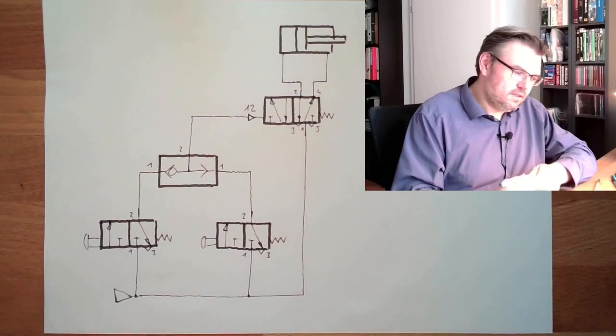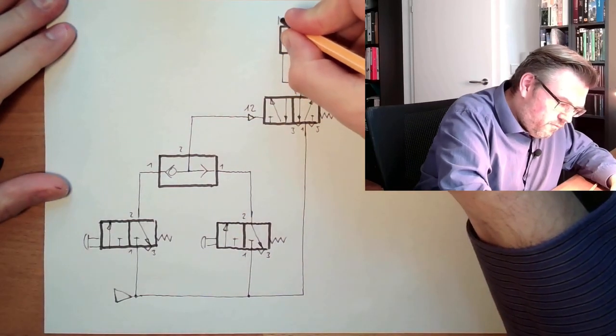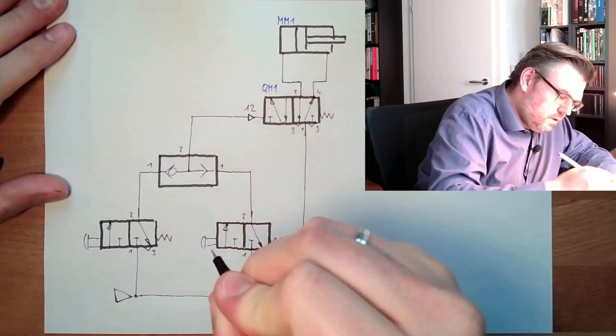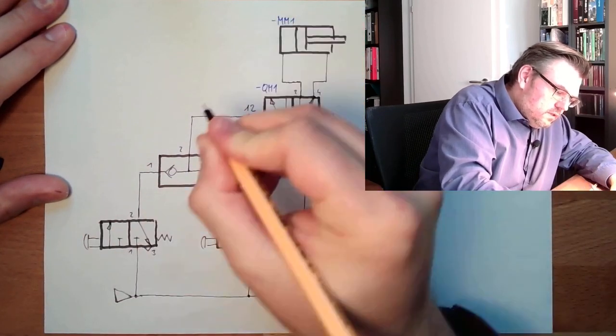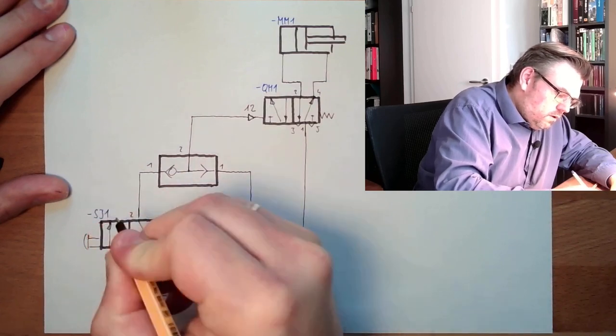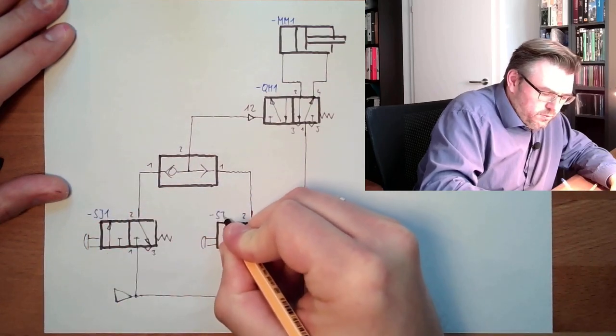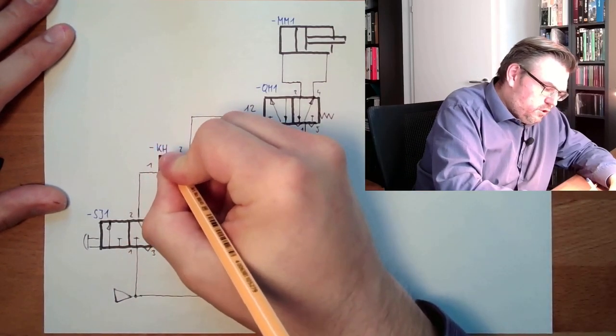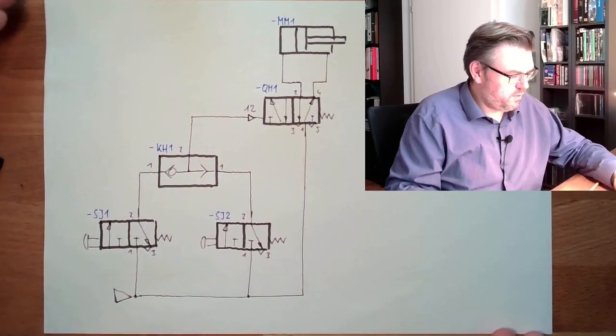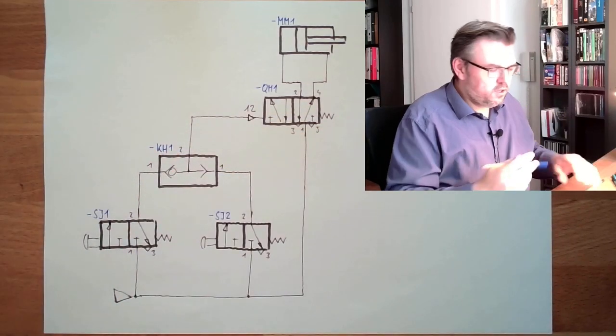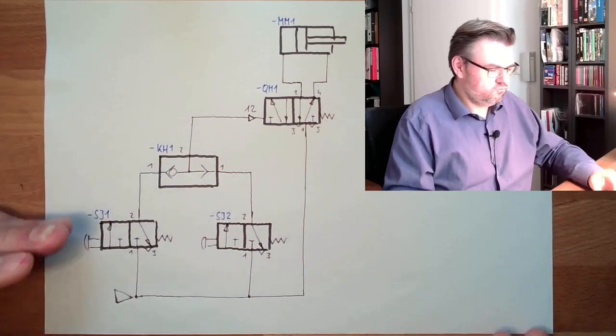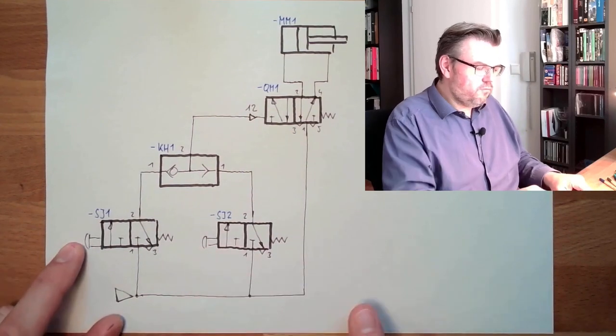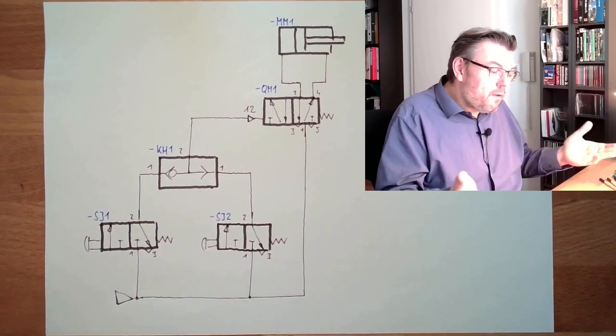We only have to name the things now. This is still our MM1. This is our QM1. This is now our switch one, and now we have our switch two. And here, this is of course information management, K, information processing, KH, fluid technique, one. That's it. This is how this would look like. Now, regardless of what button I pressed, we can move.